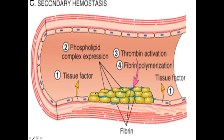Besides platelets and fibrin, you will also find white blood cells and red blood cells in this meshwork. In the following video, we will talk about the clotting cascades and the kallikrein system. Thank you.